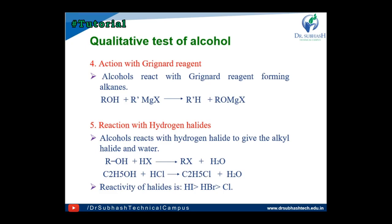The fifth test is the reaction with hydrogen halide. Any alcohol reacts with hydrogen halide to give the alkyl halide and a water molecule is removed. For example, ethanol reacts with HCl (hydrogen halide) to give ethyl chloride, and one molecule is liberated. The reactivity order of halides is: Cl less than Br less than I, as iodide is a stronger nucleophilic agent.